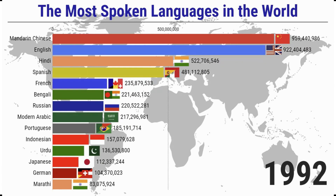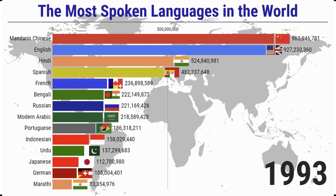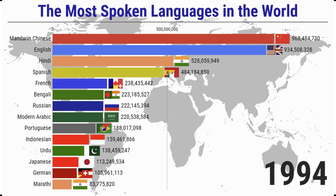There are only two Chinese-language Nobel Prize winners in science, accounting for a negligible 0.2 percent.